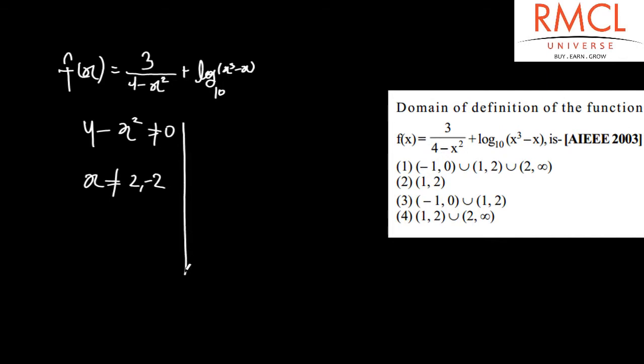And also, the value of x cube minus x is always greater than 0, therefore x multiplied by x square minus 1 is always greater than 0. Therefore, x belongs to minus 1 to 0, union 1 to infinity.